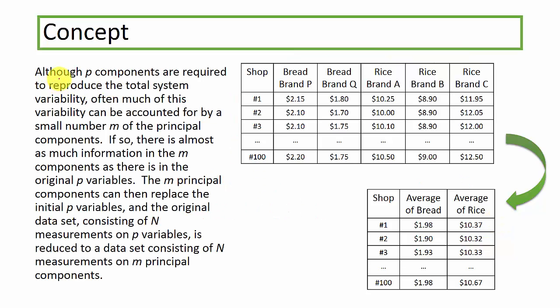So how does PCA transform data such that variability is captured as much as possible? So generally, although PCA components are required to reproduce the total system variability, which in this case, I need 5 components, which means 5 variables, it is required to capture the variability of the whole dataset. Often, much of this variability can be accounted by a small number m of the principal components. In this case, I am saying that maybe m can be just 2. I have reduced dimension of 5 to dimension of only 2.